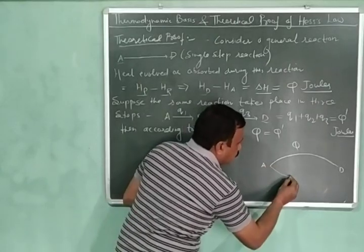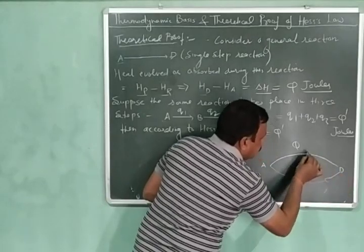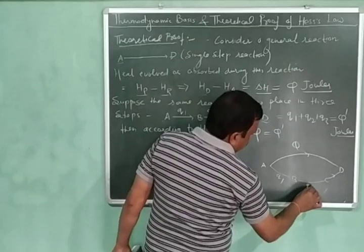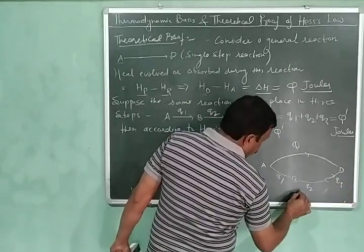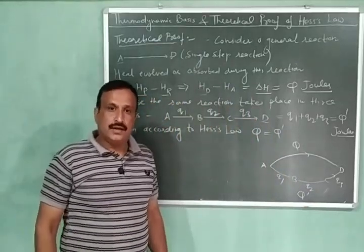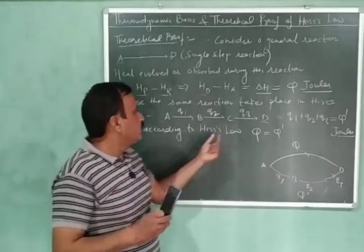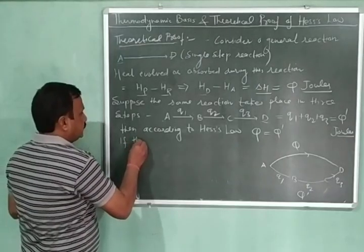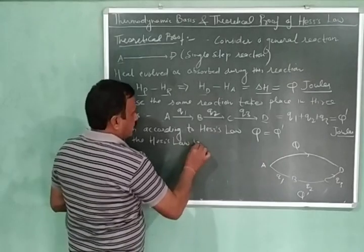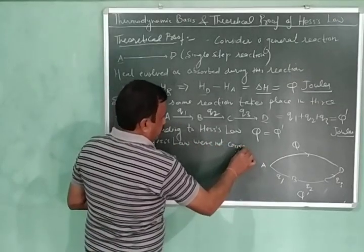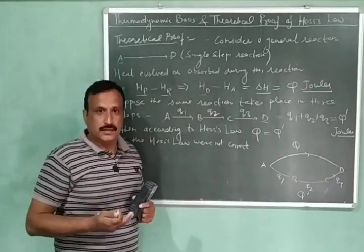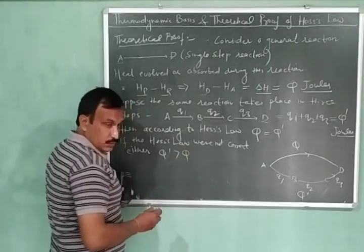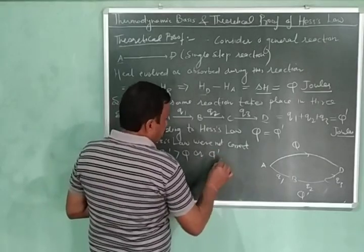Now we convert A into D in three steps: A goes to B, then B goes to C, and finally C goes to D. The heat evolved in each step is Q1, Q2, and Q3, and the total heat evolved going from A to D is Q prime. According to Hess Law, Q should equal Q prime. But if Hess Law were not correct, then either Q prime would be greater than Q, or Q prime would be less than Q.